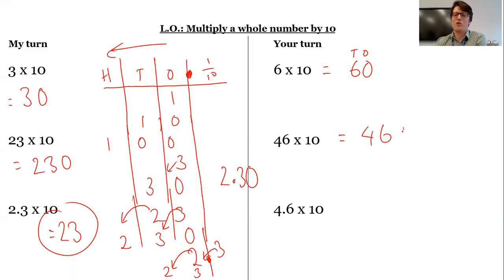46 times 10 will become 460. So now I've got my tens have moved to my hundreds. Ones have moved to the tens, and I need that placeholder in the ones to show that this is the hundreds and that this is the tens.